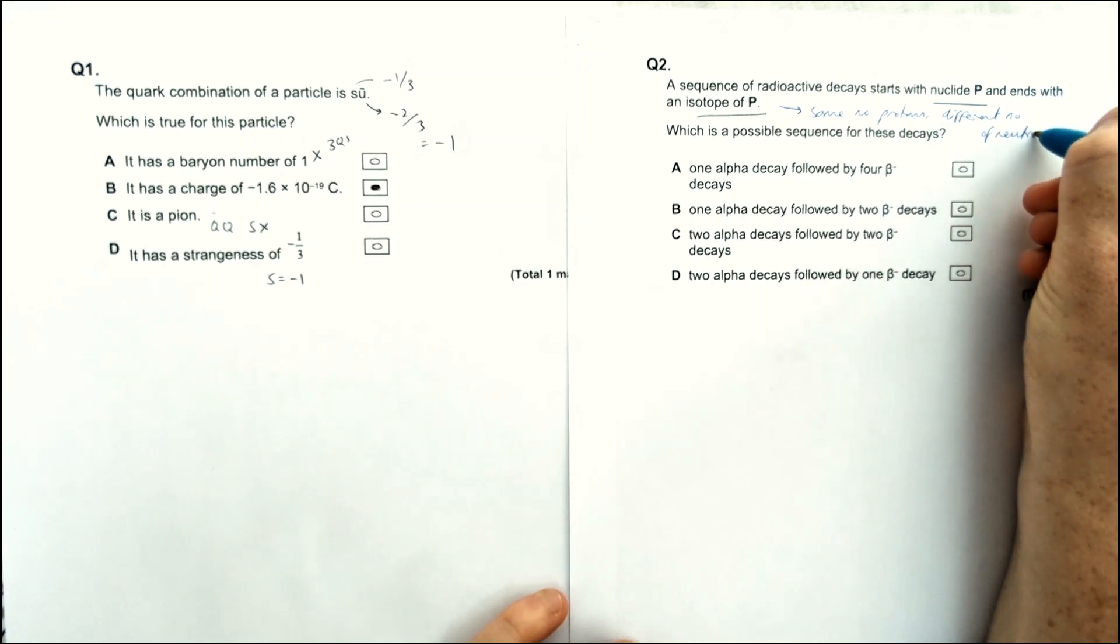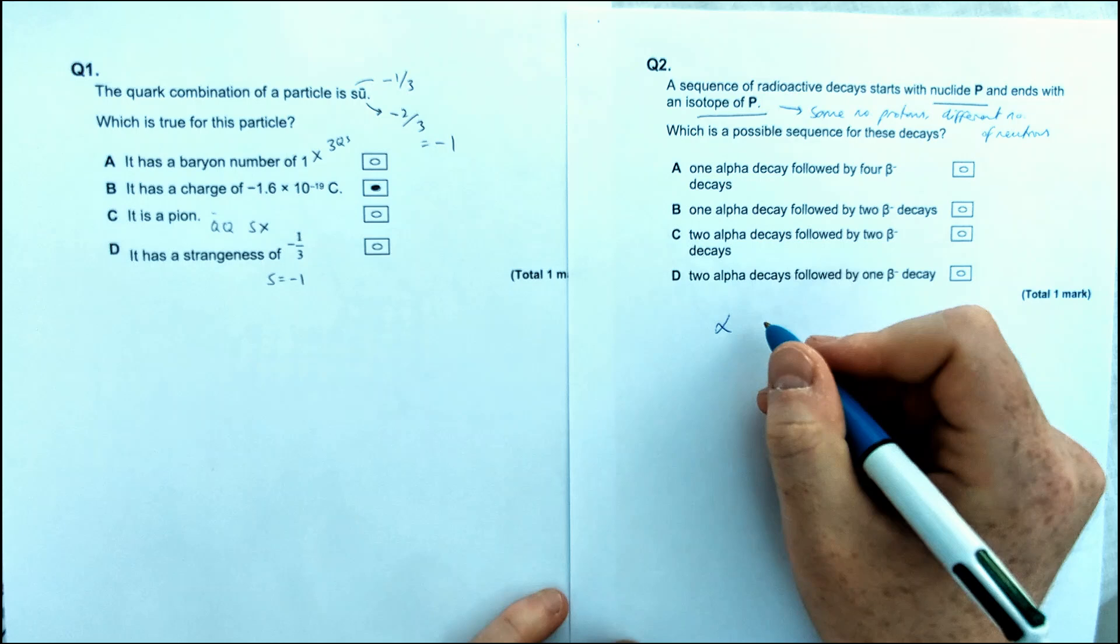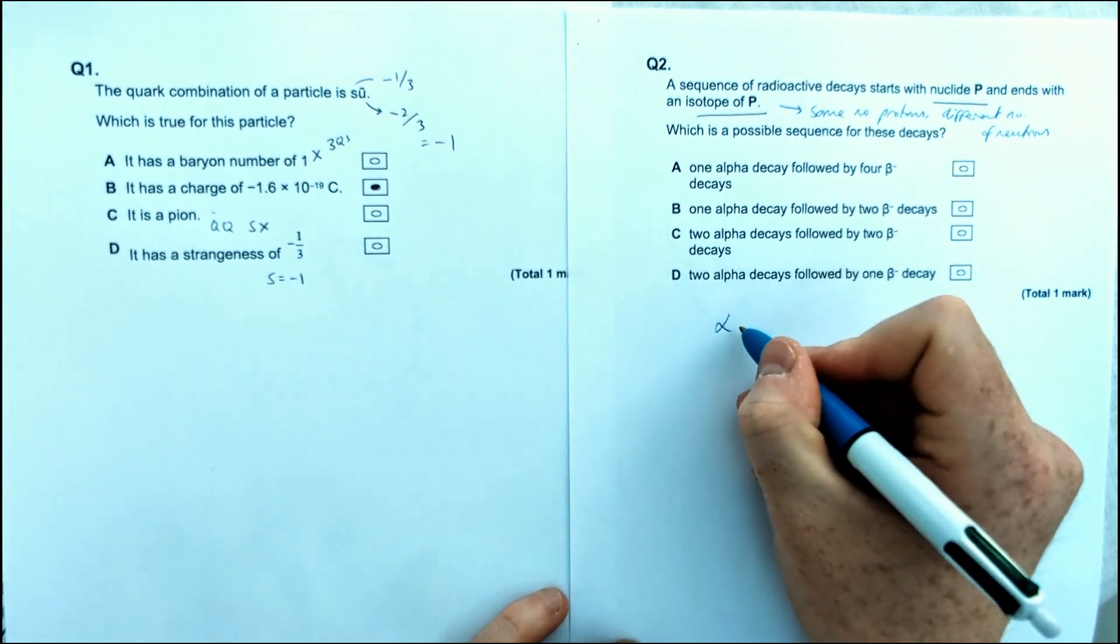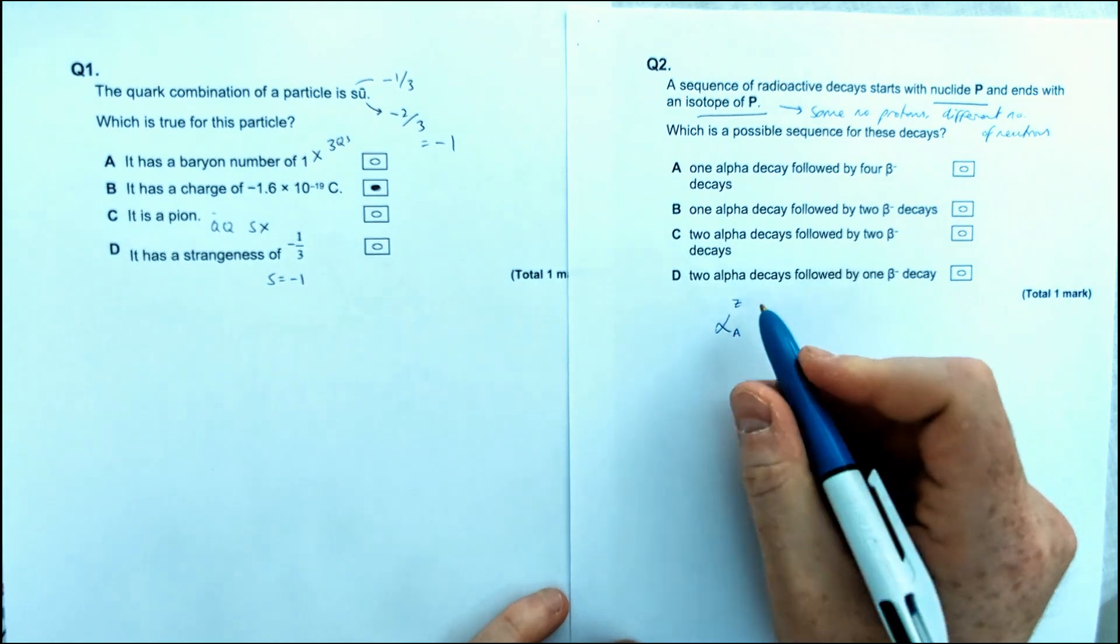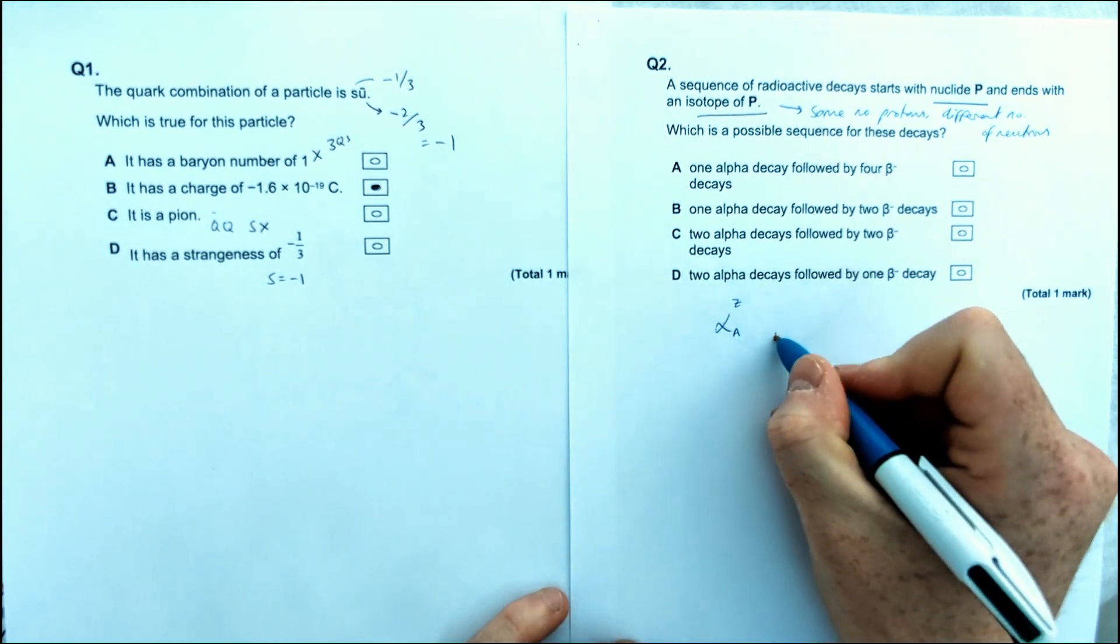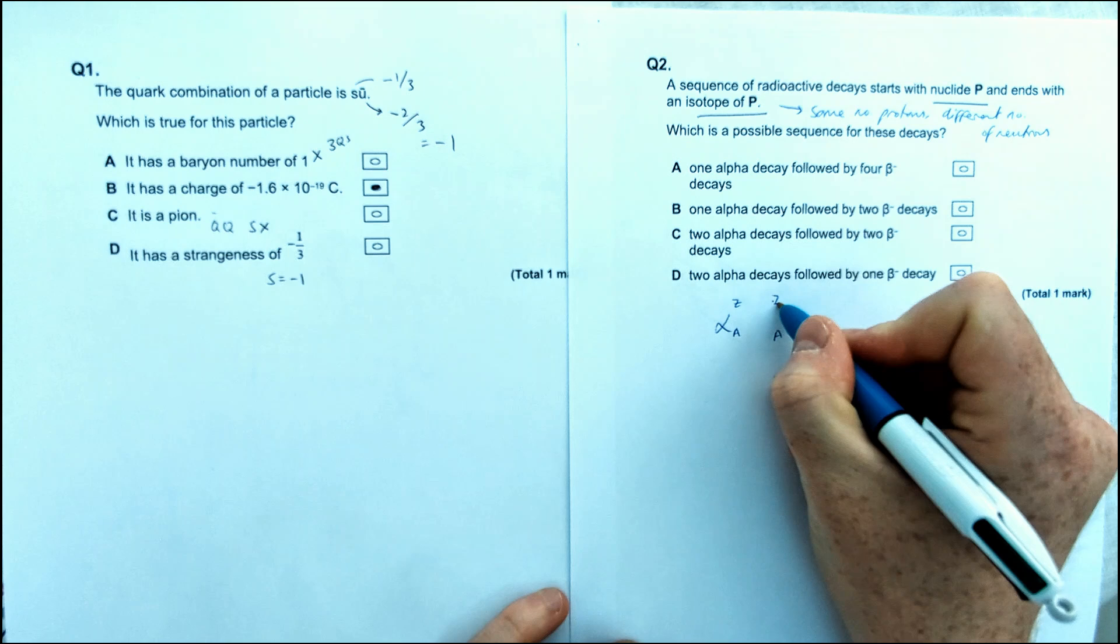Let's figure out which one's which. So for alpha, we should know that the mass number, sorry, or nuclear number, if we're looking at Z and A. So for alpha, we've got A is minus 4 and Z is minus 2.